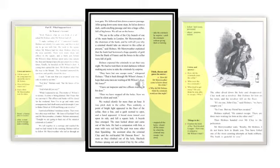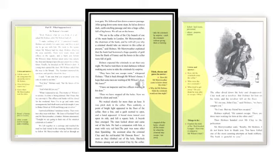Holmes whispered that the criminals had but one escape route — back through Mr. Wilson's house. He hoped men were waiting at Mr. Wilson's door. Mr. Jones confirmed he had an inspector and two officers waiting there. Holmes said: 'Then we have stopped all the holes. Now we must be silent and wait.' They waited silently for more than one hour in pitch darkness in the cellar. Then suddenly a point of bright light appeared in the floor. A line opened, a hand appeared, a broad stone turned over on its side leaving a square hole, and a boyish face emerged.